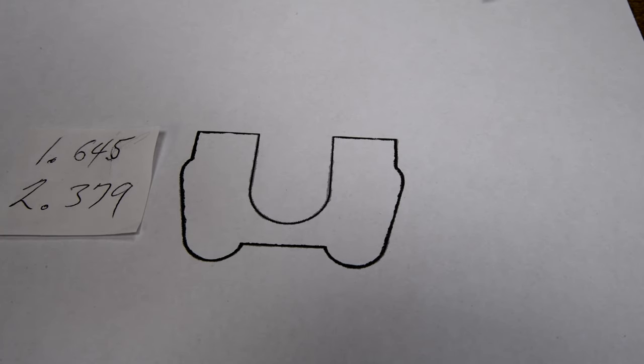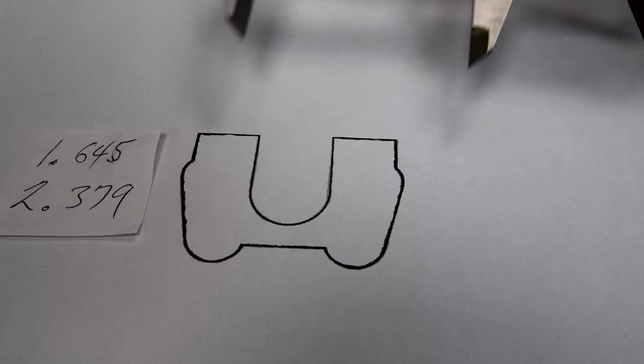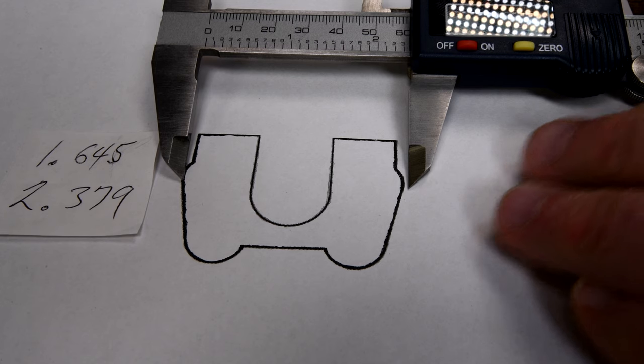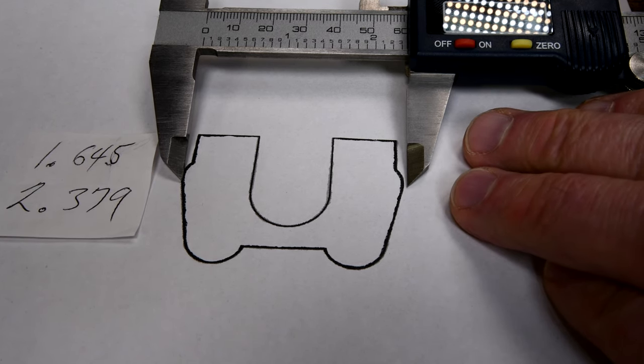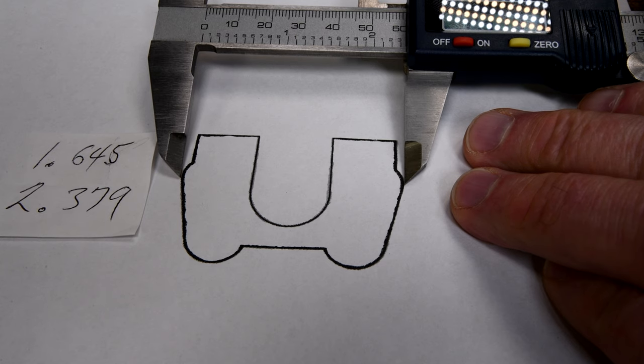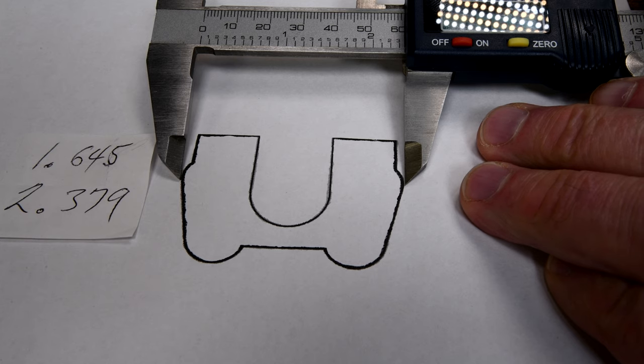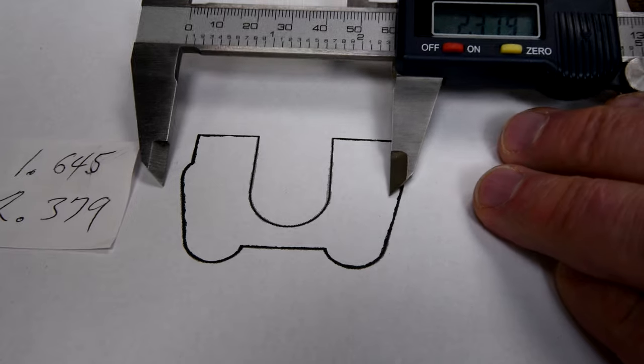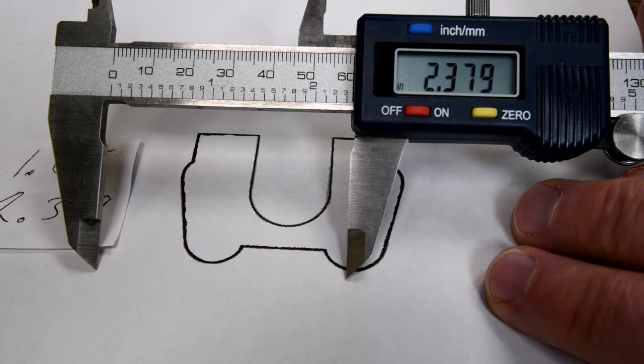Let's go the other way. Now what those corrections for error would have done is, simply put, it would have printed out just a smidgen smaller. You wouldn't be able to eyeball it, but it would have been just a tiny bit smaller. It would have been more correct. However, as I said, I can't bend my photo etch that accurately anyway. That looks pretty good to me. Anyway, you want to read it? 2.379.